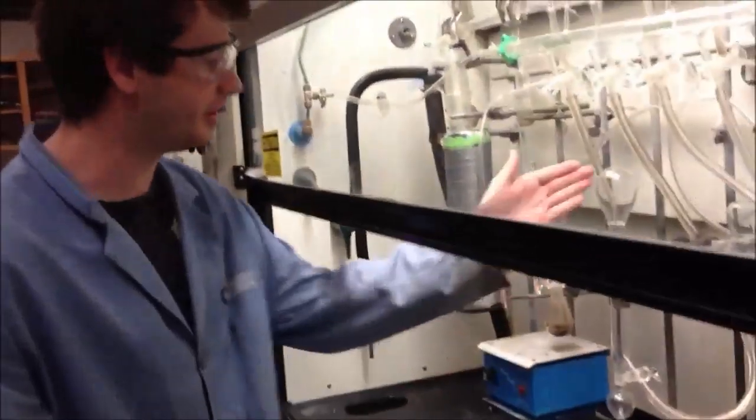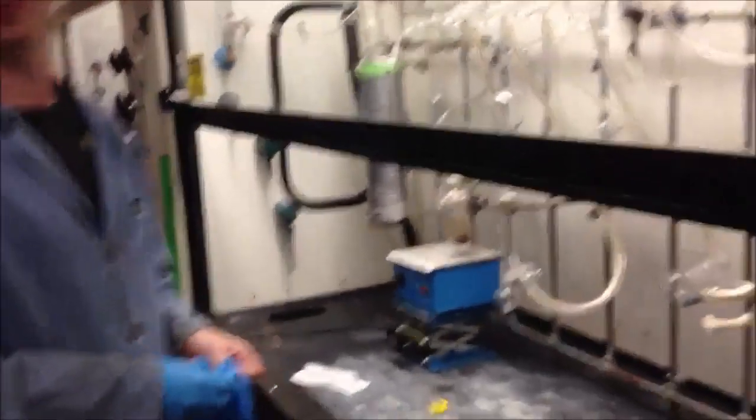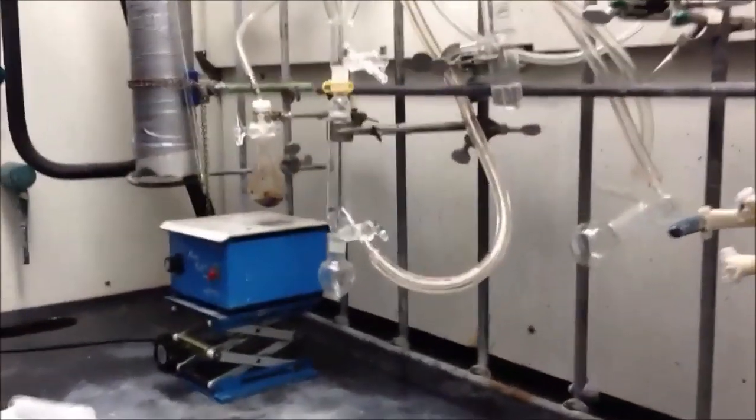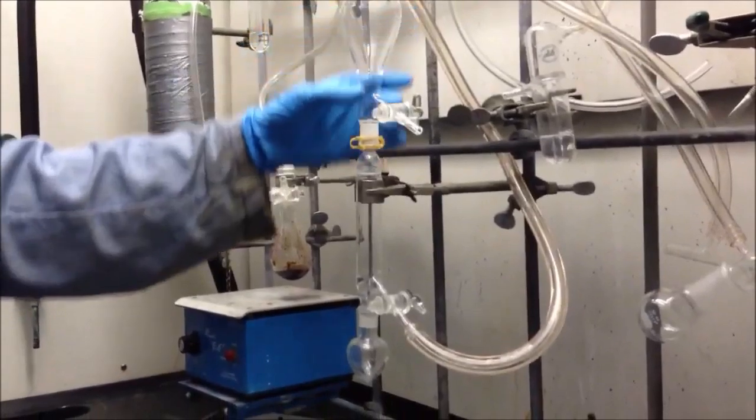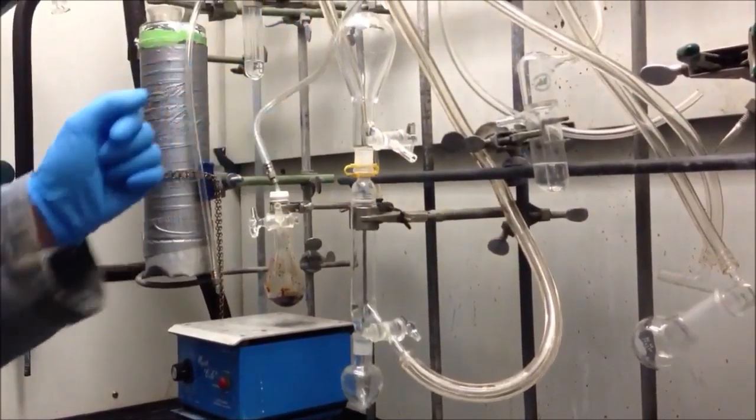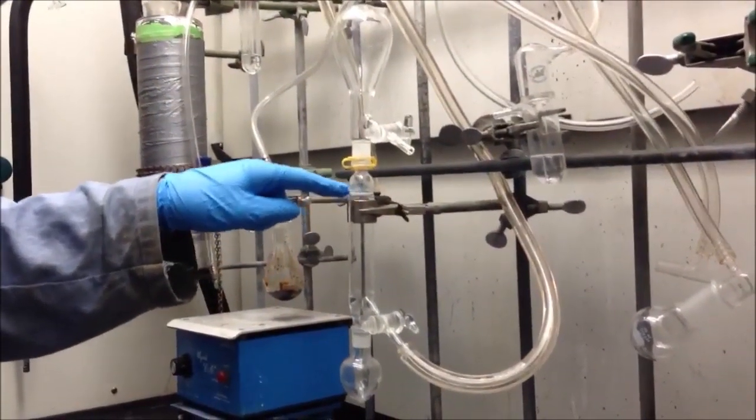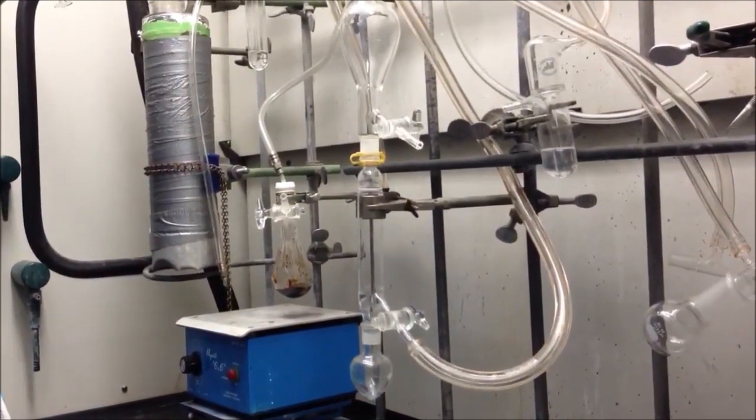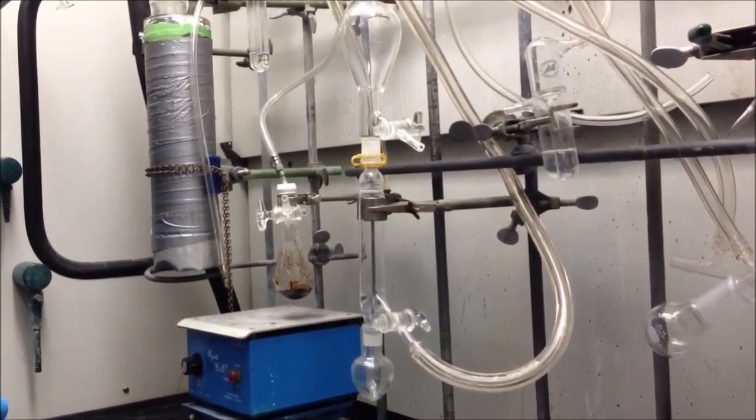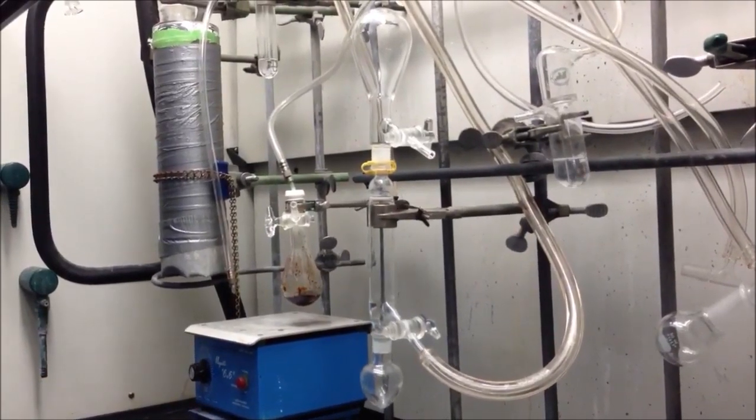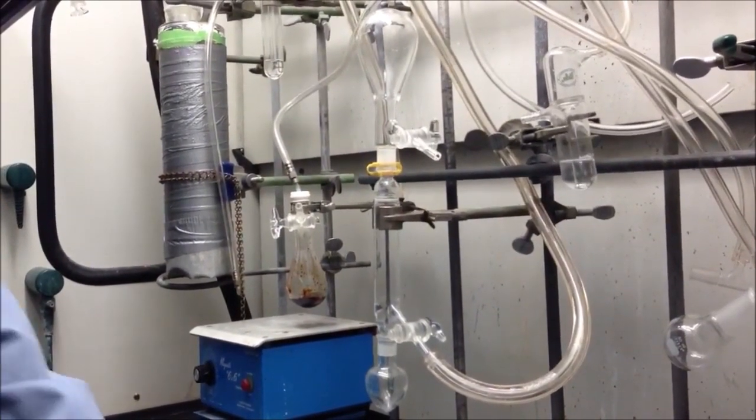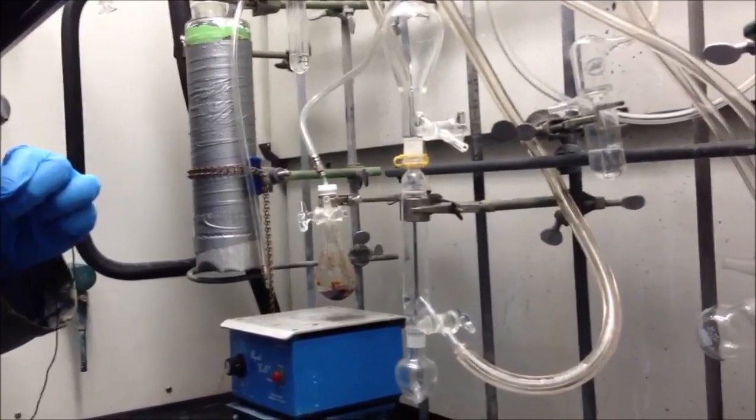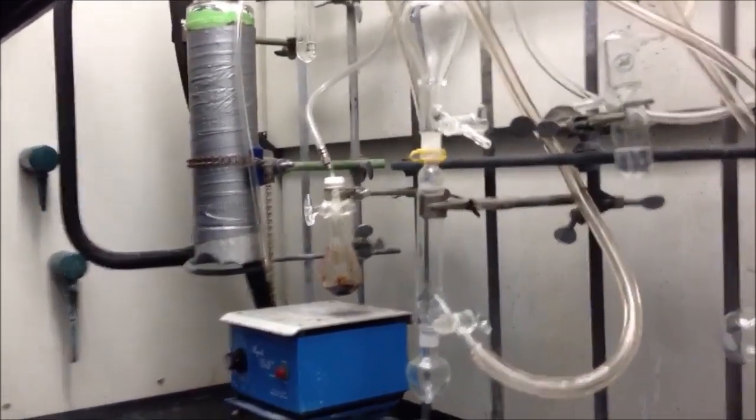And this is the little contraption that we're going to use to do the inert filtration. It essentially consists of a collection flask up here at the top, which we'll invert later, and a sintered glass filter frit, which is going to collect the solids. Okay, so the procedure calls for the addition of 25 milliliters of dry dioxane. So for that we'll need to go to the other room, so follow me.